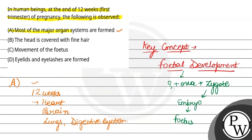The final answer is A, that is, most of the major organ systems are formed. Hope you understood it well. Best of luck. Thank you.